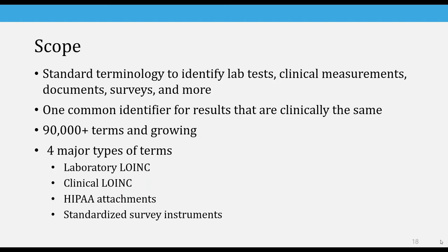The scope of LOINC started in the lab space and has grown quite a bit over the last 26 years. We mainly have four types of terms. There's lab LOINC, which most people are familiar with; clinical LOINC, which includes all sorts of measurements like body weight, vital signs, and measurements on X-ray or EKG; HIPAA attachments, which are relevant mainly for insurance and payers in the U.S.; and standardized survey instruments, which is an area that's really been growing over the past 10 years or so. We started with term one and now have about 95,000 terms and keep growing.